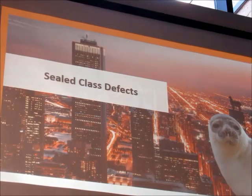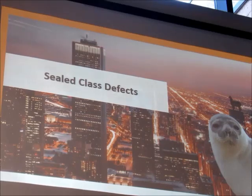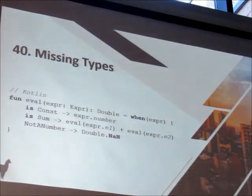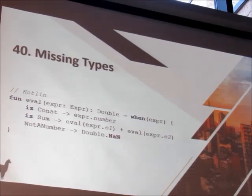A sealed class is a really awesome feature of Kotlin. A sealed class is not a defect itself — it prevents a ton of defects present in Java. Effectively, a sealed class seals a hierarchy of classes. We have this 'missing types' example. By now you're familiar with 'when' expressions. We have a function that evaluates things with a 'when' expression — checking if it's a constant and returning a number, if it's a Sum evaluating recursively and adding them, or not a number. Because these exist in a sealed class, the 'when' expression guarantees we're checking every single class inside that hierarchy.